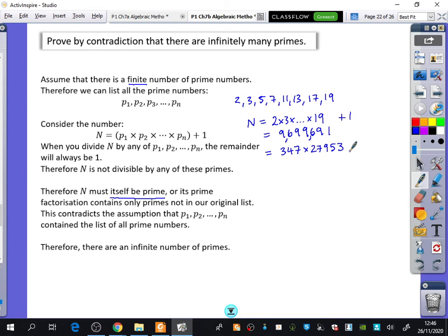This is a tough proof. Everyone can start by assuming there's a finite number of primes, listing them as P1, P2, etc., multiplying them together and adding one, then explaining you can't divide by any of those numbers. So either this is prime, or its prime factorization contains only primes not in the original list.